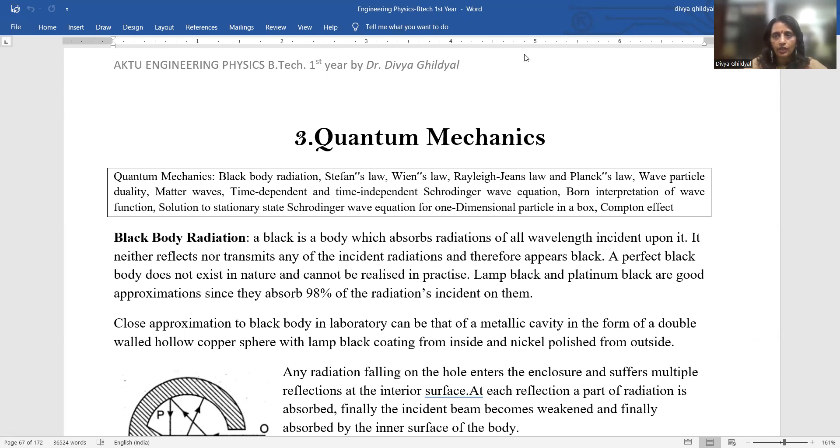Now, first, let us have a look at the syllabus of this unit. The Quantum Mechanics unit, the first line consists of five laws related to energy: Black Body Radiation, Stefan's Law, Wien's Law, Rayleigh-Jean's Law, and Planck's Law. You have to memorize the statement of these laws and derive an expression for average energy of a Planck's oscillator.